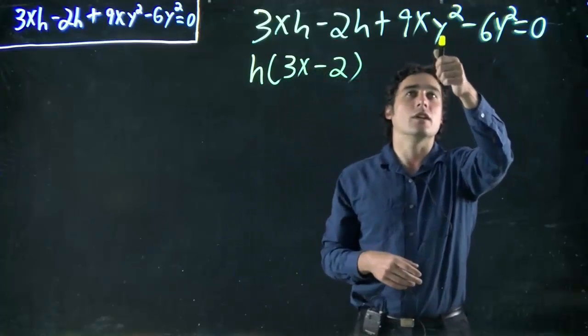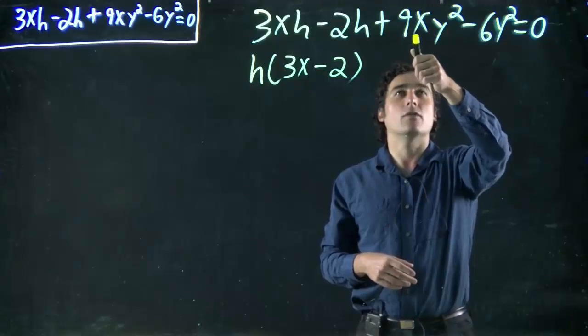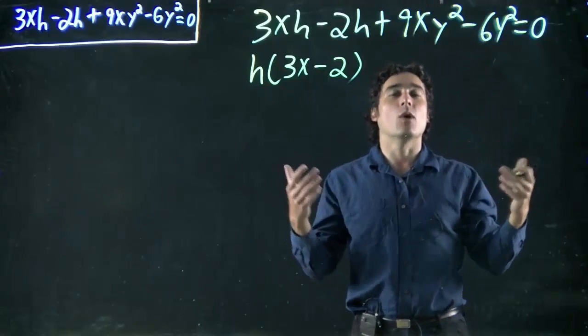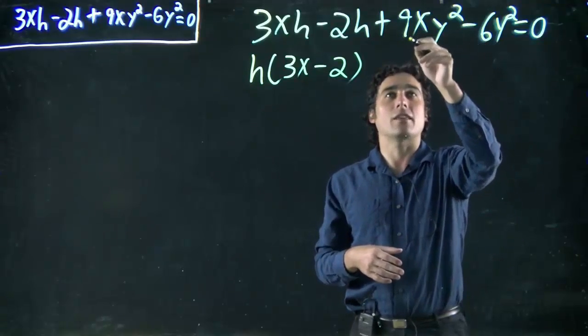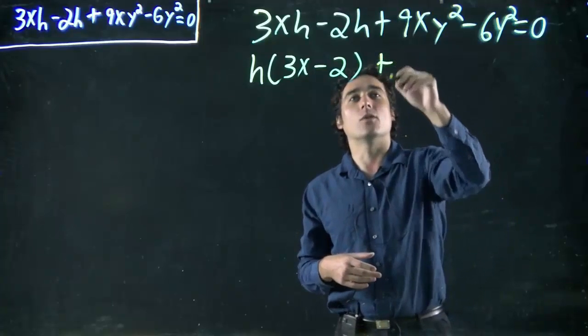Now in this case, we can definitely factor out a y squared, because they both have that. But if we look, we can also factor out a 3. Remember, factoring out, we want to leave behind whole numbers. In this case, if I divide both these terms by 3, I'm going to still get whole numbers.